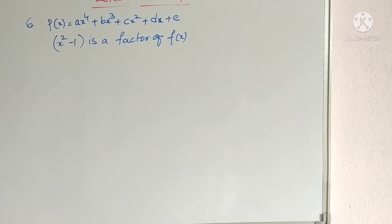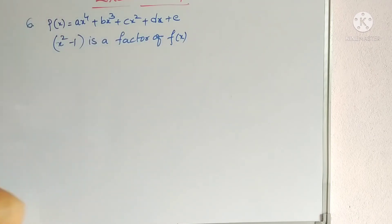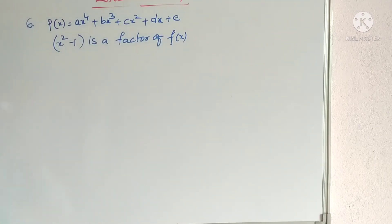Our sixth problem: if x² − 1 is a factor of ax⁴ + bx³ + cx² + dx + e, show that a + c + e = b + d = 0. The given polynomial p(x) = ax⁴ + bx³ + cx² + dx + e, and x² − 1 is a factor of p(x).